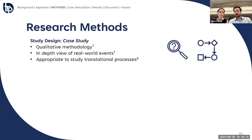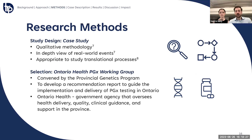To fulfill these objectives, we chose a case study approach using qualitative methodologies. These methods allowed for an in-depth view of real-world events and are also known to be an appropriate study design to study translational processes. For our research, we selected the Ontario Health Pharmacogenomics Working Group, which was convened by the Provincial Genetics Program to develop a recommendations report to guide implementation and delivery of PGX testing. Ontario Health is a government agency that oversees health delivery, quality, guidance, and recommendations in the province. This case in particular was valuable to research due to its multidisciplinary nature, the fact that we were actively performing a translational process, and the potential applicability to other emerging technologies.